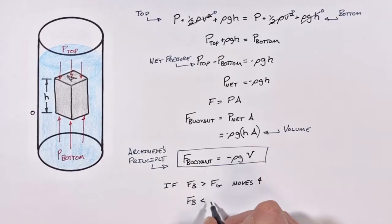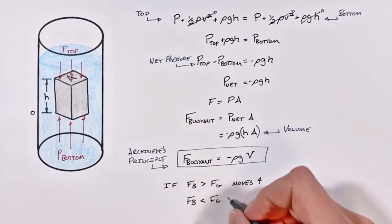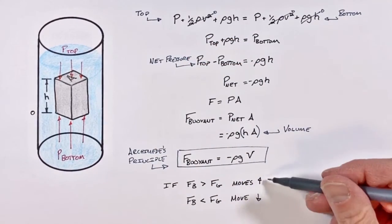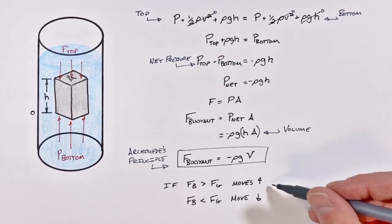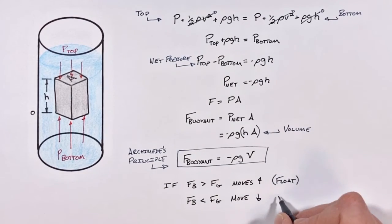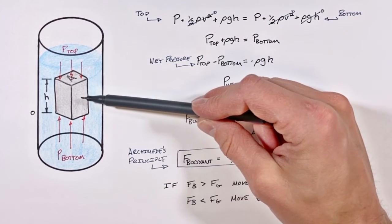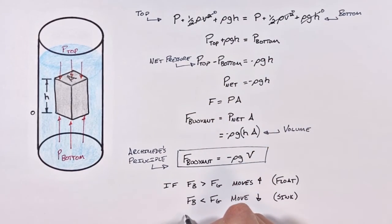If the buoyant force is less than the force by gravity, there's going to be a net force downward on this object and it will move down. And effectively what this is is the difference between floating and sinking. Now in the rare case where a buoyant force is exactly equal to the force by gravity, there's going to be no net force and we'll say that's neutrally buoyant.